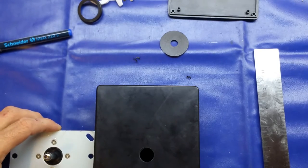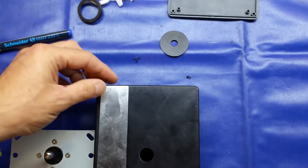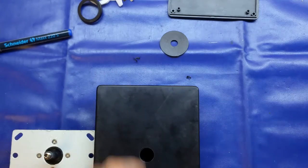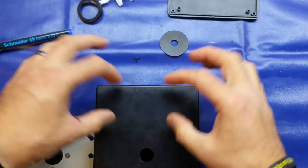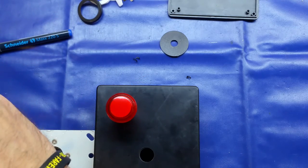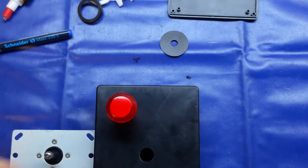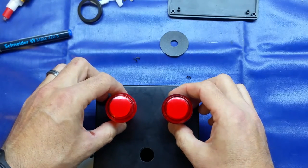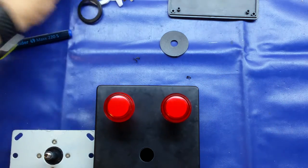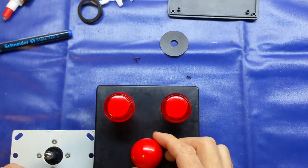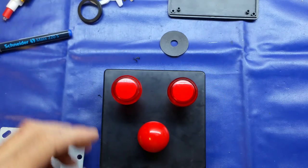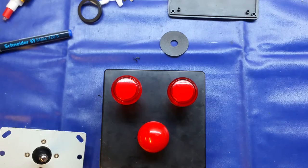Now we're going to mark where we want these. We've got around 5 centimeters to play with above the joystick itself. We don't necessarily need both switches, but I think it will look a bit nicer with the two. Keep it symmetrical.